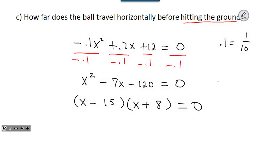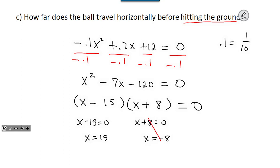Setting each factor equal to zero: x minus 15 equals 0 gives x equals 15, and x plus 8 equals 0 gives x equals negative 8. In the context of this problem — how far does the ball travel horizontally — we cannot have a negative 8 feet, so that's not a valid solution. Therefore, the ball travels 15 feet before hitting the ground.